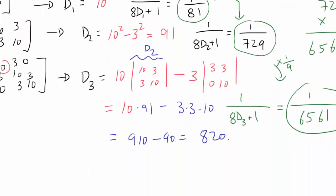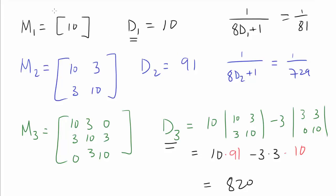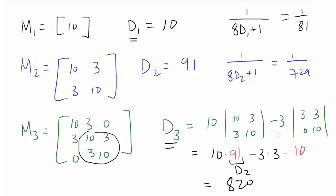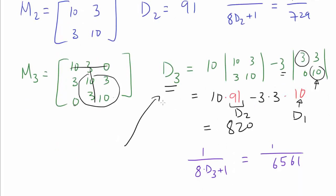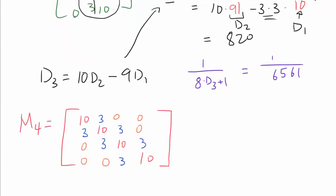So let's dive into the proof. Before we begin, it's imperative to realize that D3 can be written in terms of D1 and D2. Specifically, D3 equals 10 times D2 minus 3 times the determinant of [[3,3],[0,10]]. That second determinant is 3 times 10, so we have 9 times D1. So D3 equals 10 times D2 minus 9 times D1. Let's see if this extends to D4.